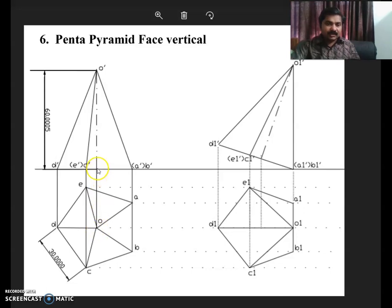From the axis you can drag to XY line and from here to here it is 60 mm altitude. That is given in the question. And now complete the front view by projecting from each corner to XY line and then joining with the apex.